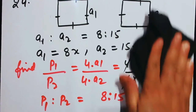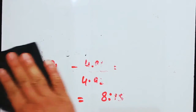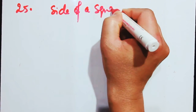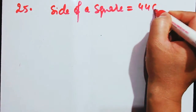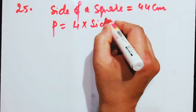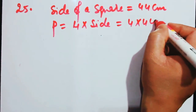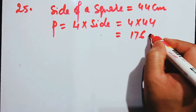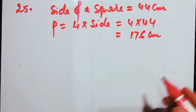Number 25: each side of a square is 44 centimeters. The perimeter equals 4 times the side, so 4 times 44 equals 176 centimeters. That's the first part done.